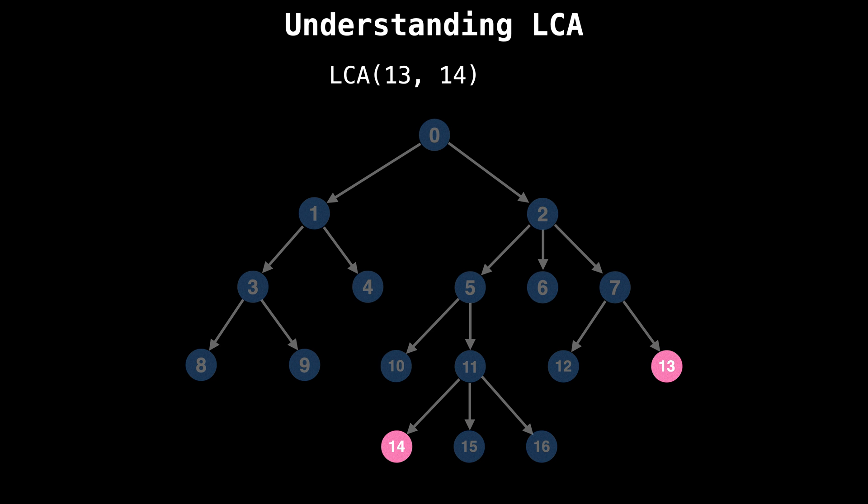Alright, here we go. So what is the lowest common ancestor of 13 and 14? I'll give you a moment to figure it out. In this example, the lowest common ancestor would be node 2. You can see that if you were to walk up the tree from node 14 and node 13, that node 2 would be the first node that they have in common.